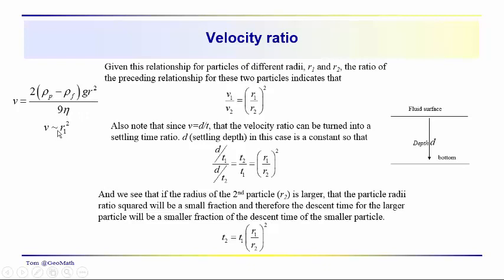Working with this relationship, the particle velocity is again proportional to the square of the particle radius divided by the viscosity. In general, we can say that velocity is proportional to radius squared. So if we have two particles settling — say washed out into a delta or shoreline in a lake or ocean environment — the ratio of the settling velocities of two particles with different radii will be: v1 over v2 is proportional to the ratio of those radii squared.